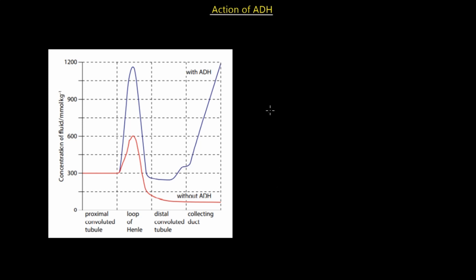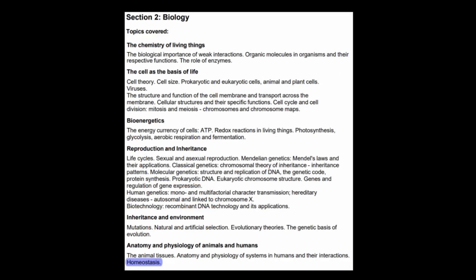To conclude, a graph here highlights the significance of ADH in regulating water and maintaining homeostasis. With ADH there is a large spike in water reabsorption in the loop of Henle, and most importantly a large spike in reabsorption in the collecting duct, creating more concentrated urine. Without sufficient ADH in the blood, urine is more dilute. In the next lecture we will look at the homeostasis and control of glucose concentration.